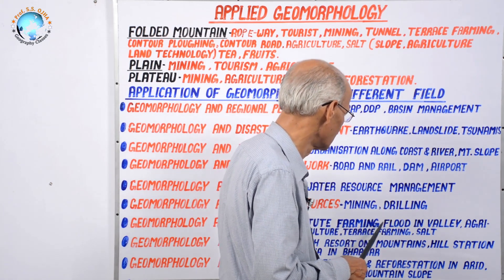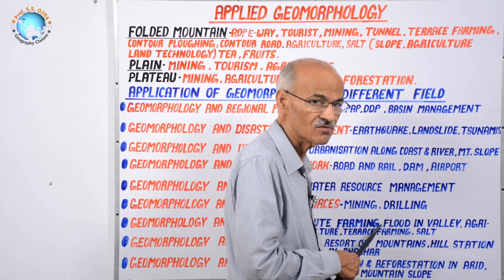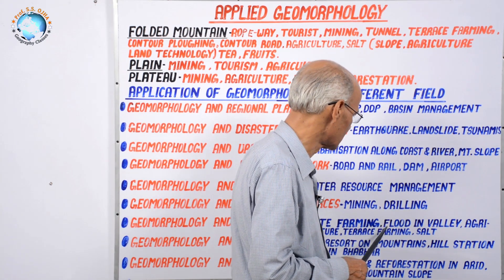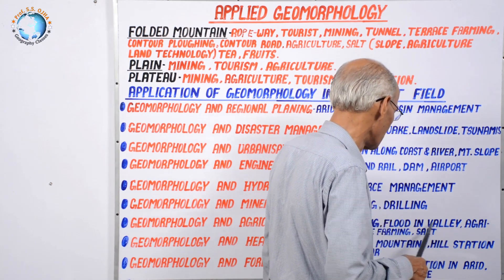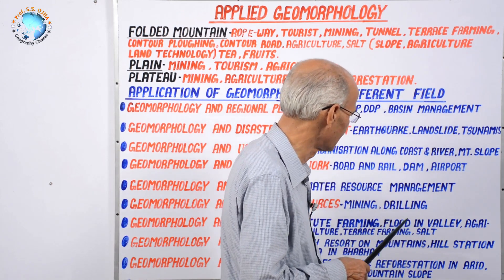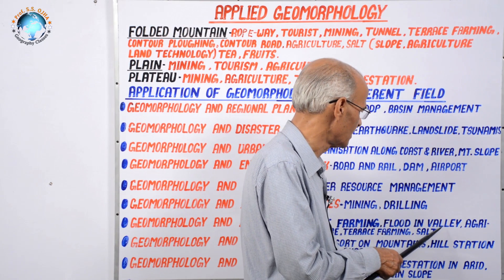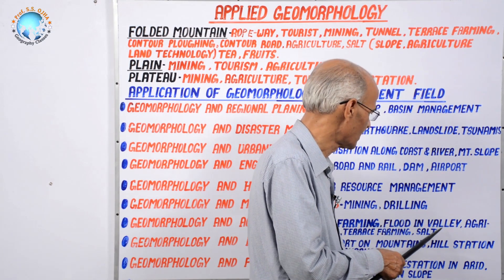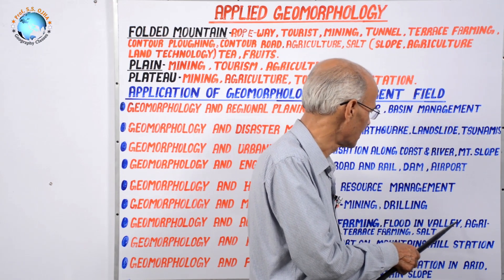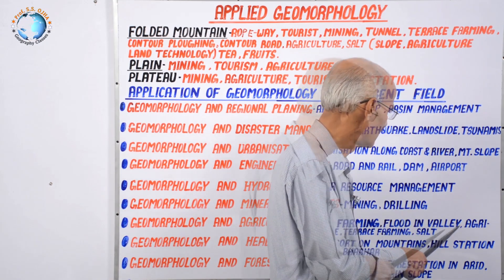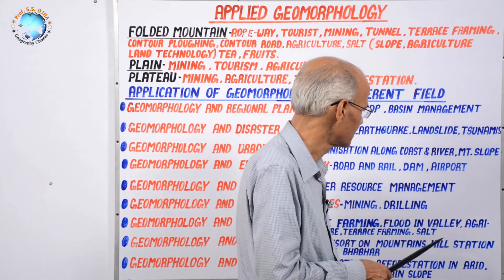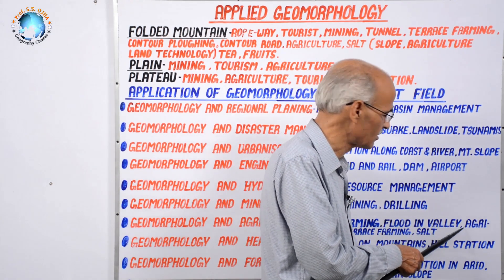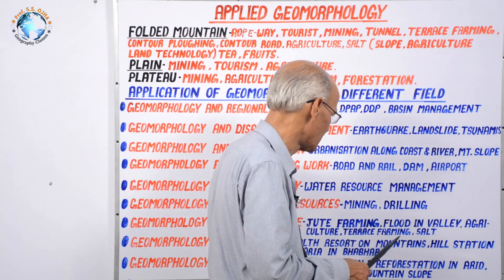For example, jute farming is practiced in low-lying areas with sufficient water, such as West Bengal and Bangladesh. Flood in fluvial valleys — such as the Ganga, Brahmaputra, Mississippi, Missouri, Murray-Darling, and Hwang Ho — frequently affects farming. Farmers practicing agriculture in these flood-prone valleys should have accurate knowledge of geomorphic processes.